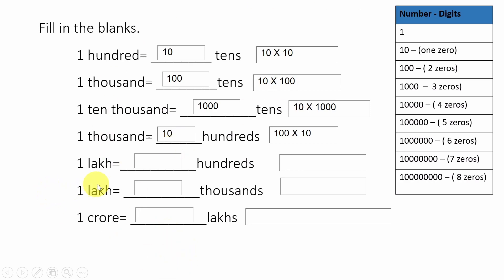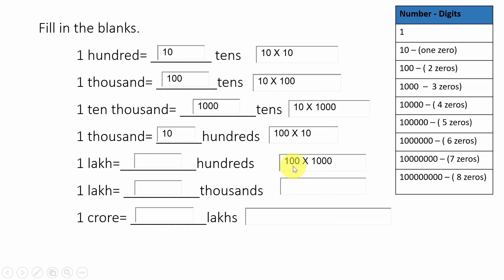Next: one lakh equals how many hundreds? One lakh should be written as a product of hundreds — hundred into what number? One lakh means five zeros. We already have two zeros in hundred, so we need three more zeros, which is one thousand. So one lakh equals one thousand hundreds.